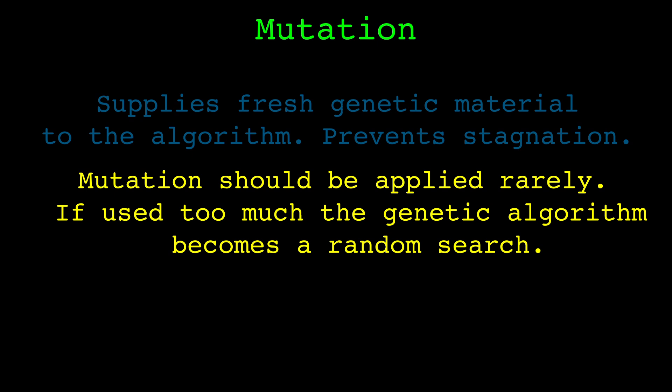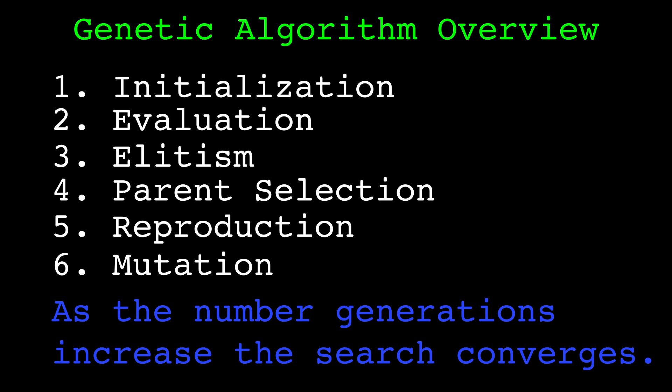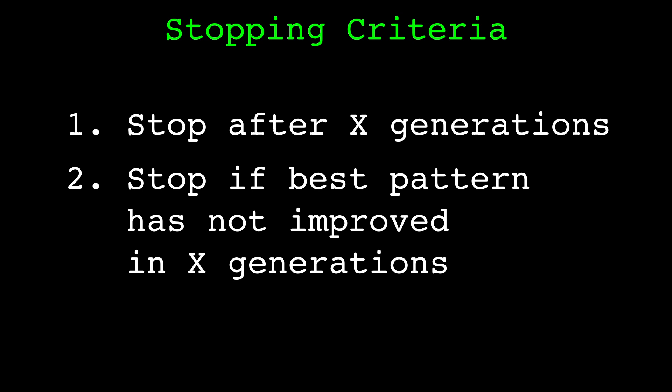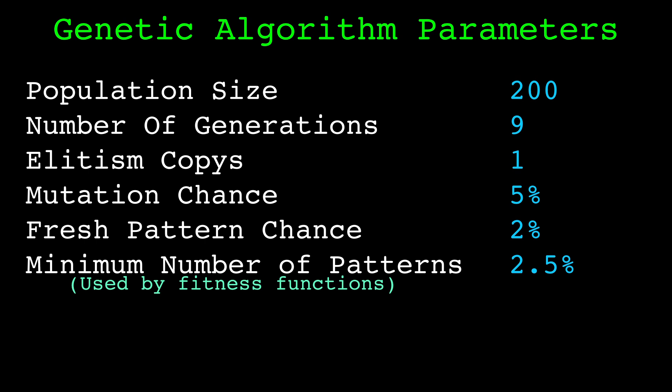After these steps we have completed a generation. We start again at the evaluation step to move to the next generation. We can repeat this evolutionary process for as many generations as we wish, but we get diminishing returns as the algorithm converges. There are a few options to decide when to stop — such as stopping after a fixed number of generations or stopping if we have not improved the best pattern in a fixed number of generations. In my experiments the stopping criteria is not very important for the candlestick pattern application, so I opt for the simple fixed number of generations. The population size, number of generations, elitism number, mutation chance, and fresh pattern chance are all parameters of the genetic optimization procedure.